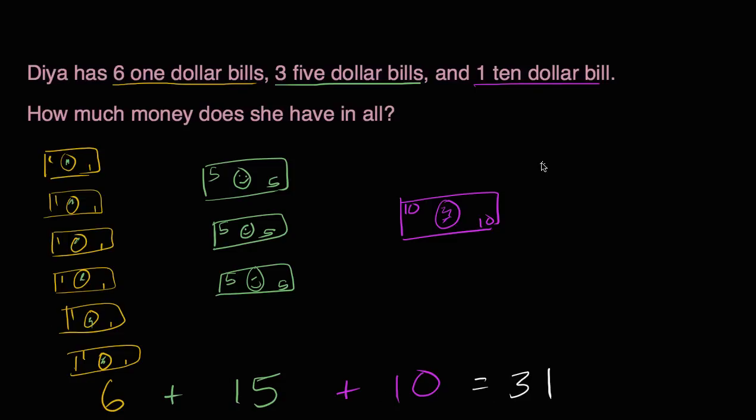And you could have also added it this way. You could have said 15 plus 10 plus 6. Add them together and we would have gotten five plus zero plus six is 11. That's one one and one 10. And then you have three 10s here. So $31.